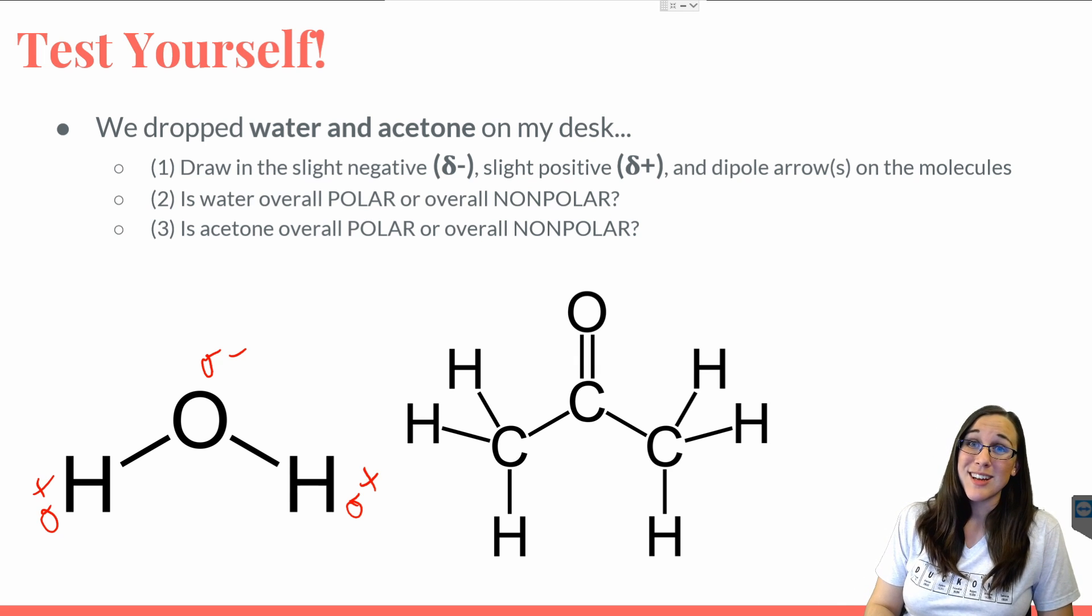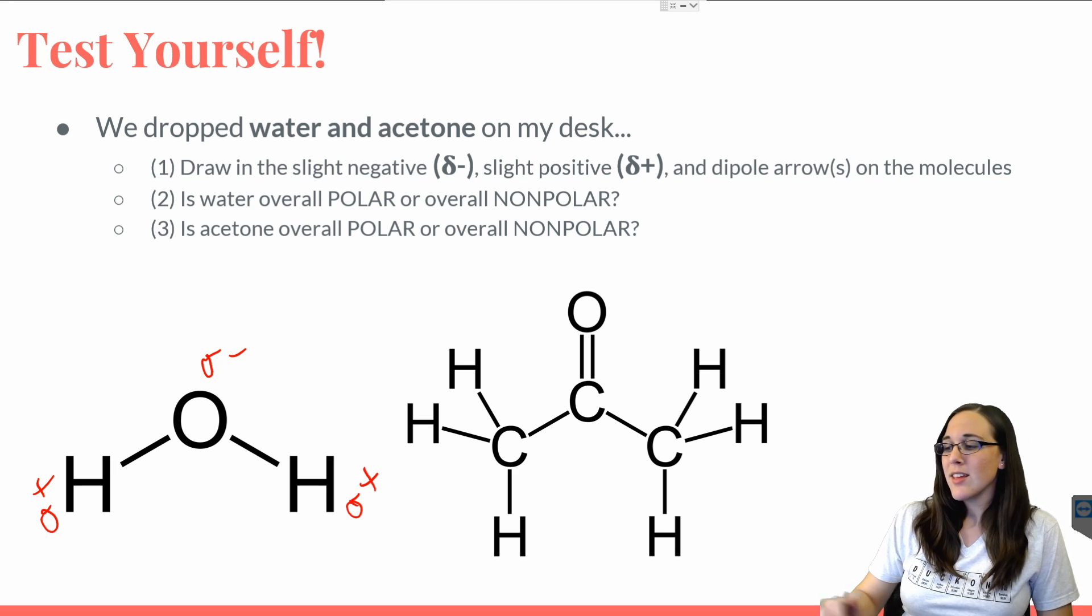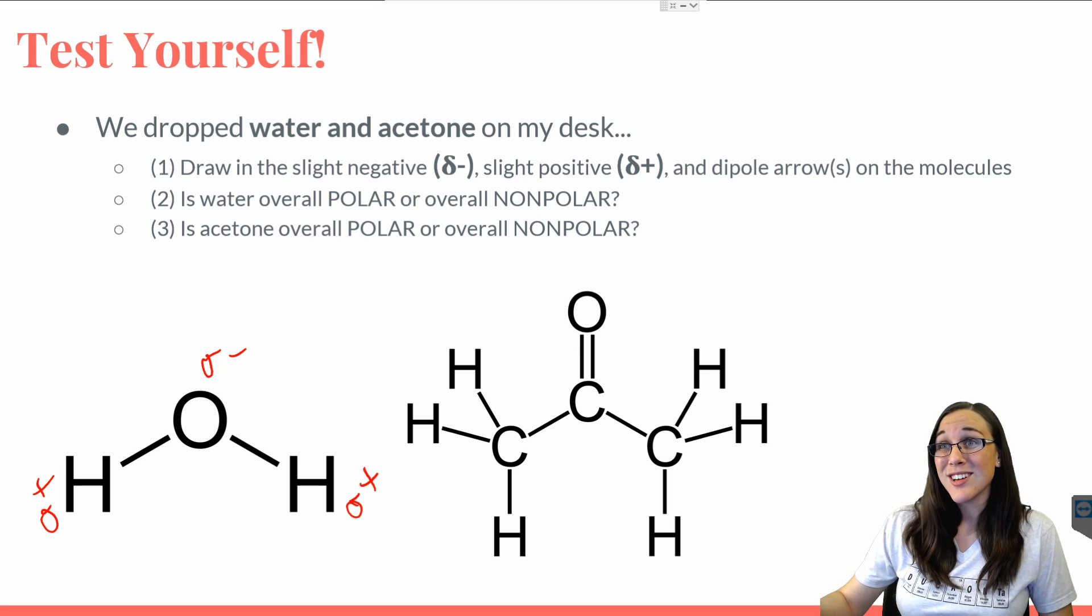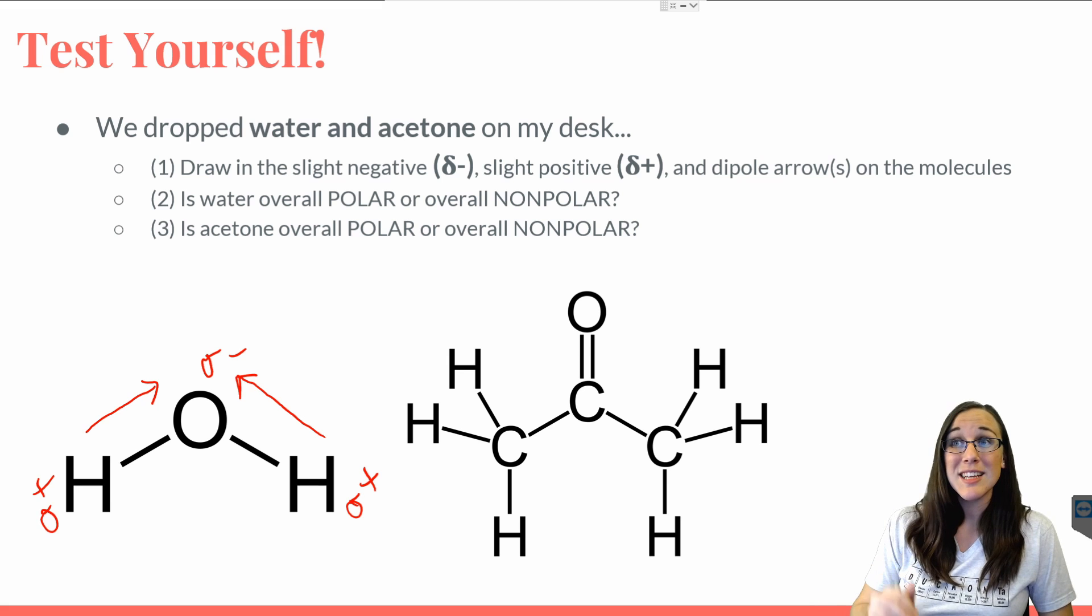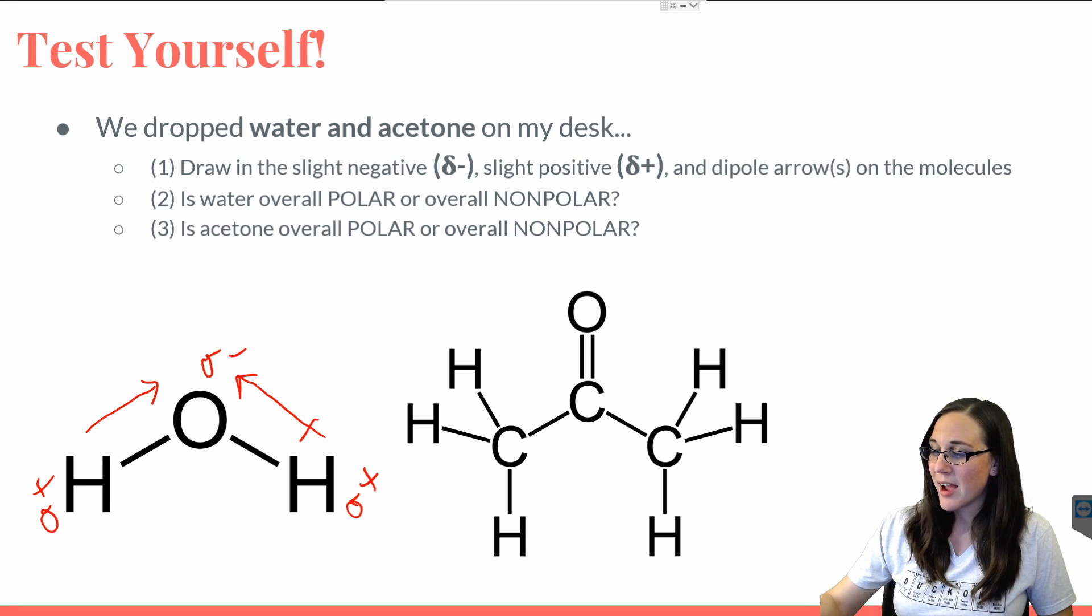Now that we know where the electrons like to hang out, we should draw an arrow above the bonds, where the electrons are going. The electrons are all heading towards oxygen, so we're going to draw an arrow towards oxygen. The last thing we need to do is draw a plus on the butt for the arrows by the hydrogens.